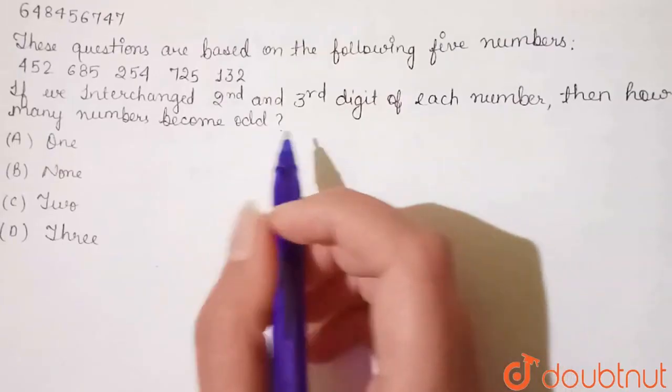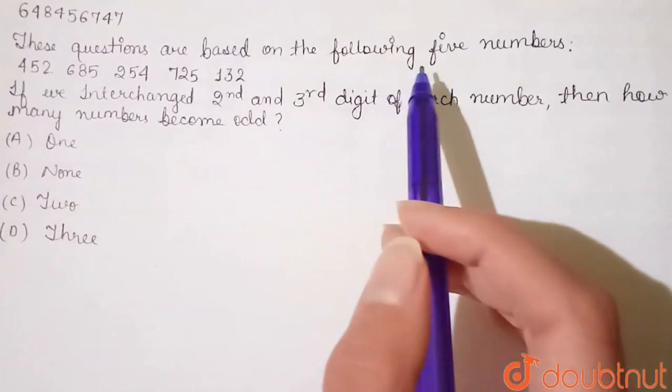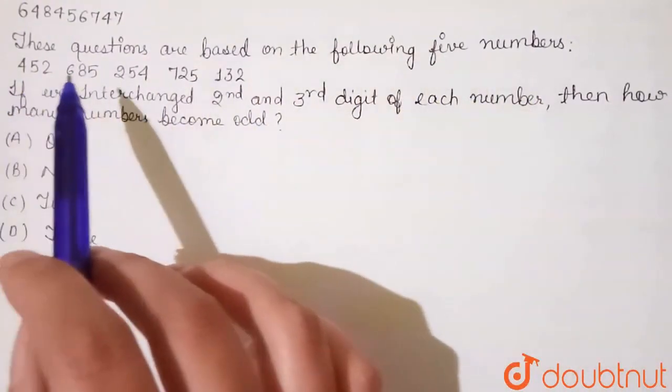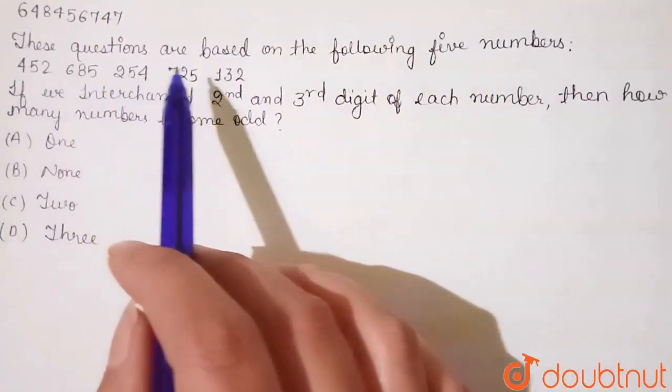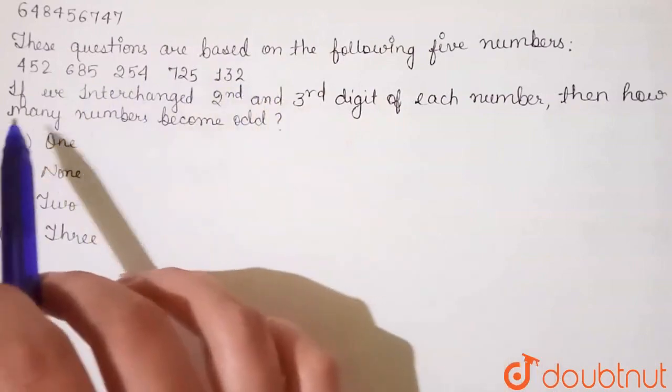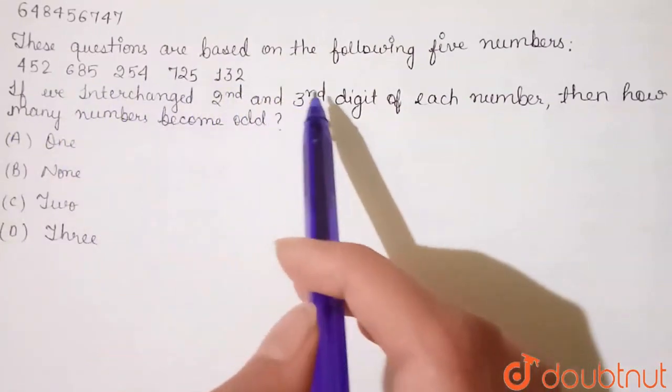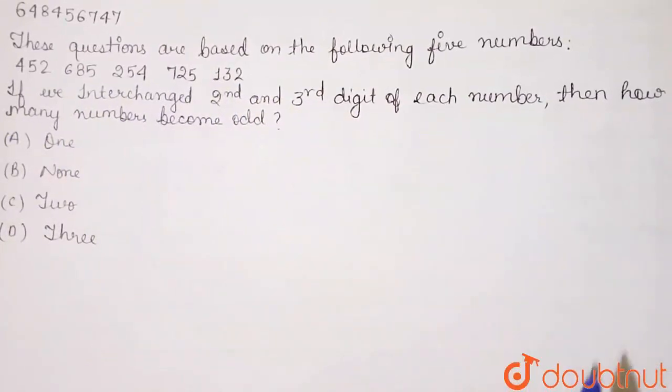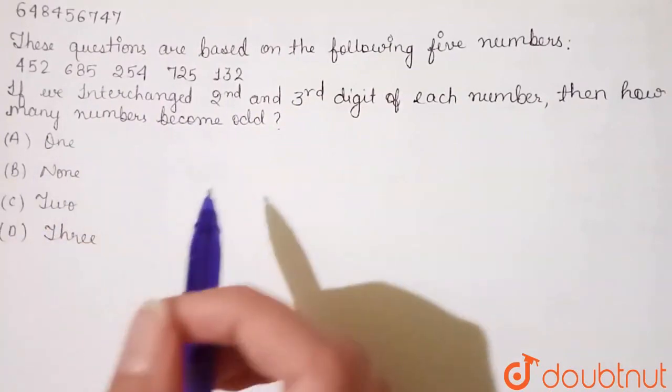Let's see the question. These questions are based on the following 5 numbers: 452, 685, 254, 725 and 132. If we interchange 2nd and 3rd digit of each number, then how many numbers become odd?